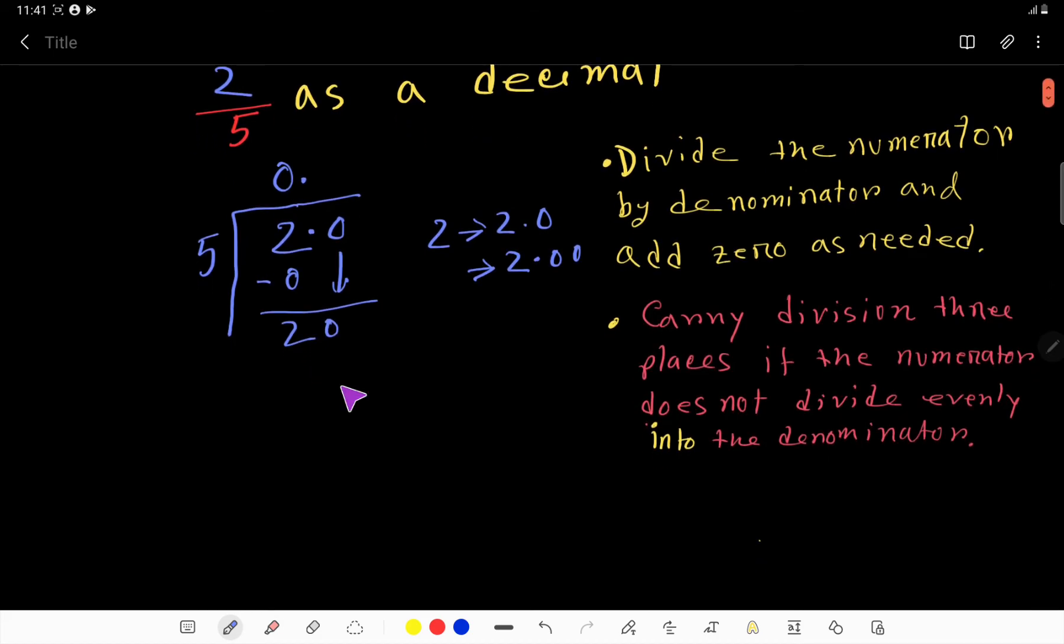To do this, we need the multiplication table. 5 times 1 is 5. 5 times 2 is 10—just add 5 to 5 to get 10. 5 times 3 is 15—add 5 to get 15. 5 times 4 is 20. Look, here we have 20, so 5 goes into 20 four times.